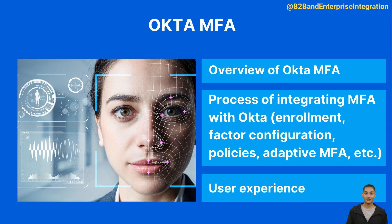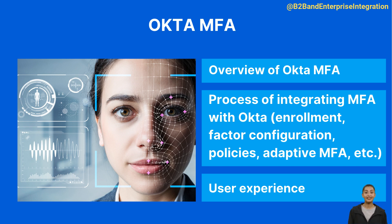Here is an overview of the Okta MFA integration process. 1. Enrollment and activation: after setting up MFA, users are prompted to enroll their secondary authentication method during their next sign-in. After enrolling, the user is activated and ready to use MFA. 2. Configuring factors: Okta allows admins to set which factors are allowed for their users. This is done via the admin console, allowing you to enable, disable, and configure the settings for each factor.